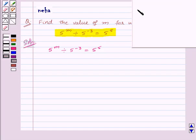Now, recall the result: a to the power m divided by a to the power n is equal to a to the power m minus n. So, this will be 5 to the power m minus minus 3 equal to 5 to the power 5.